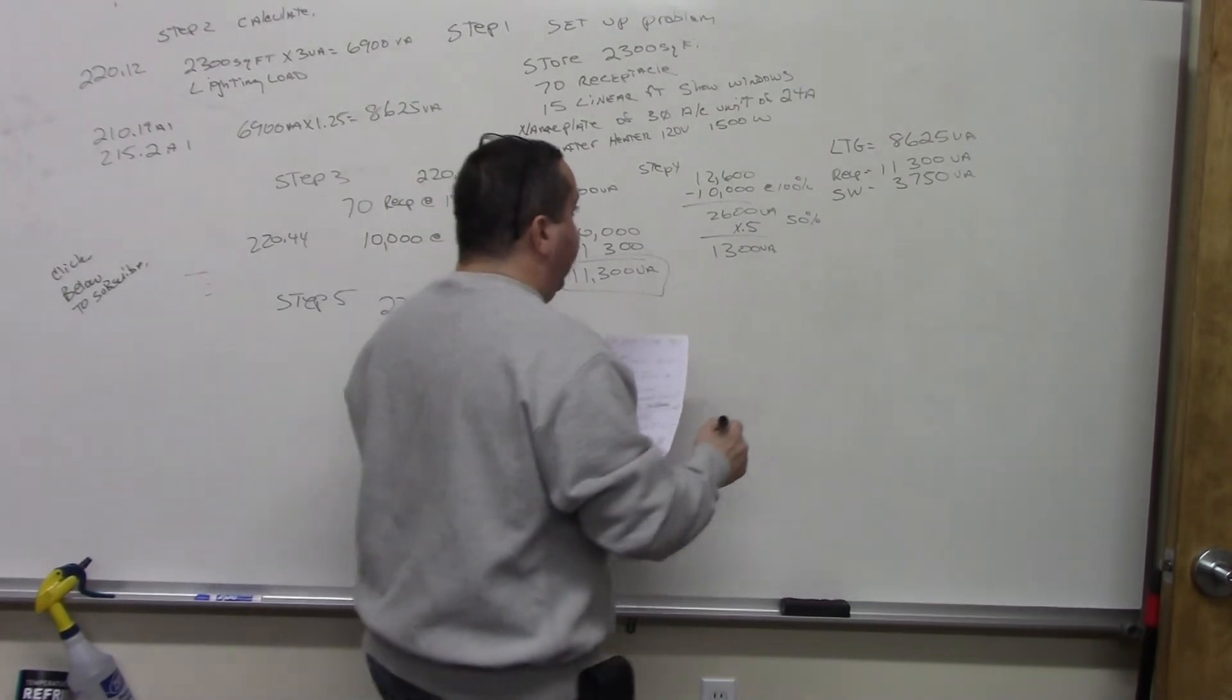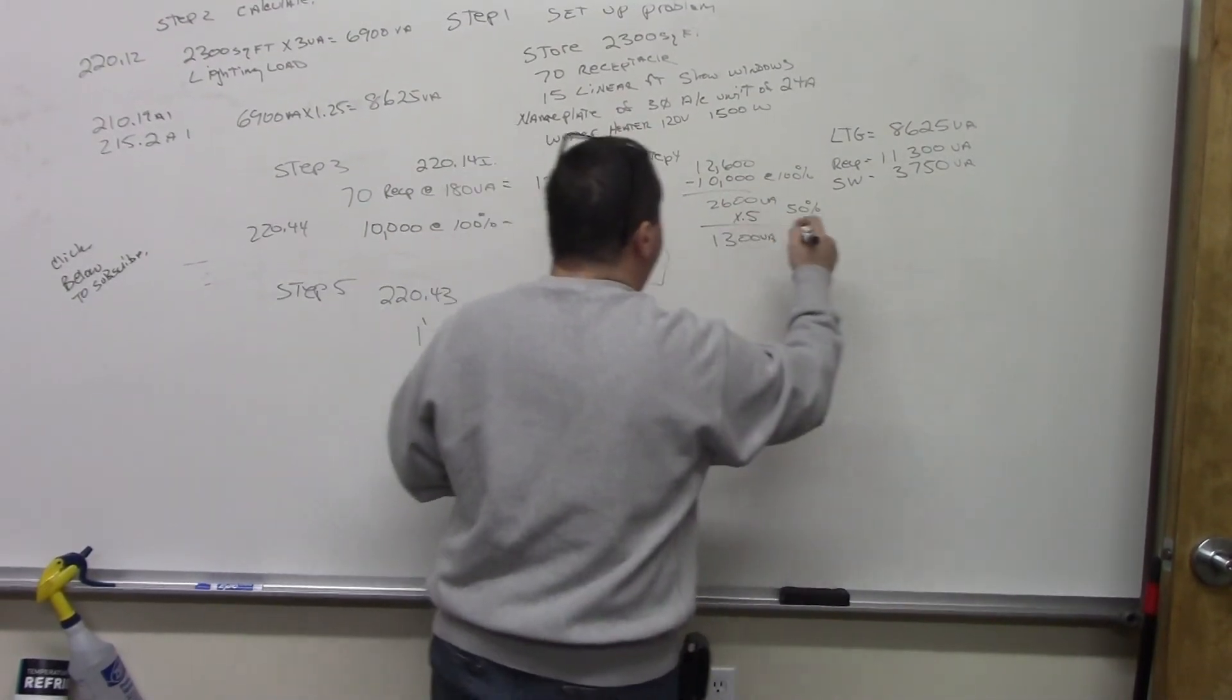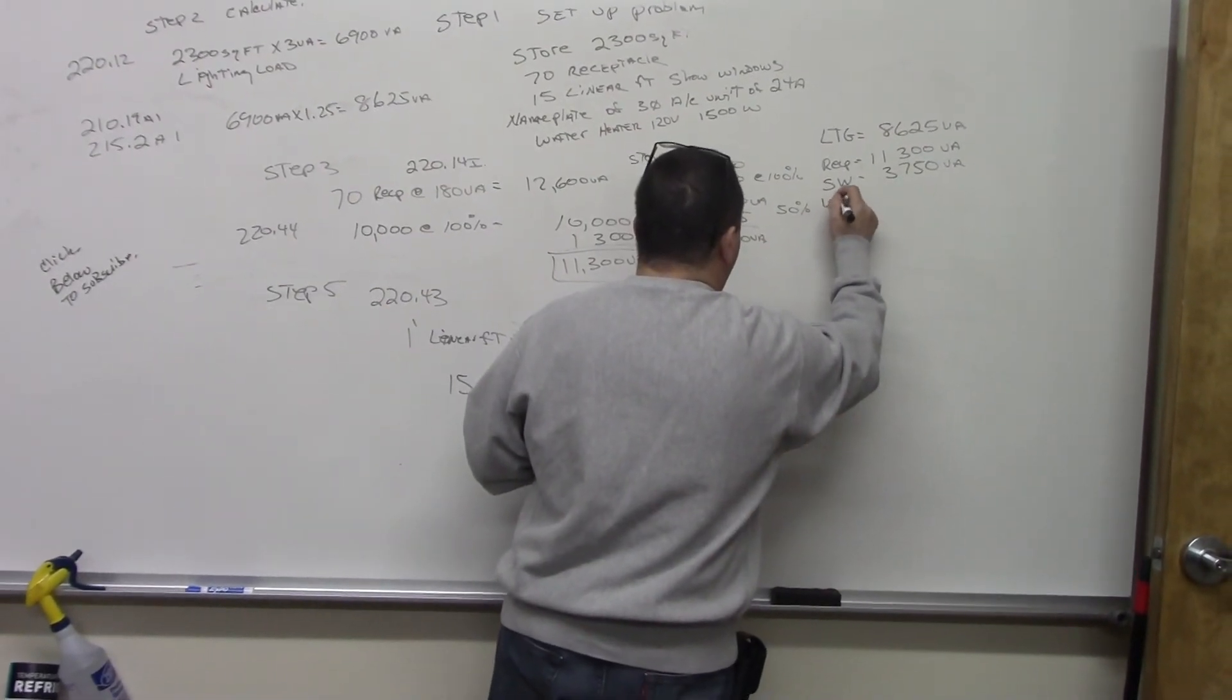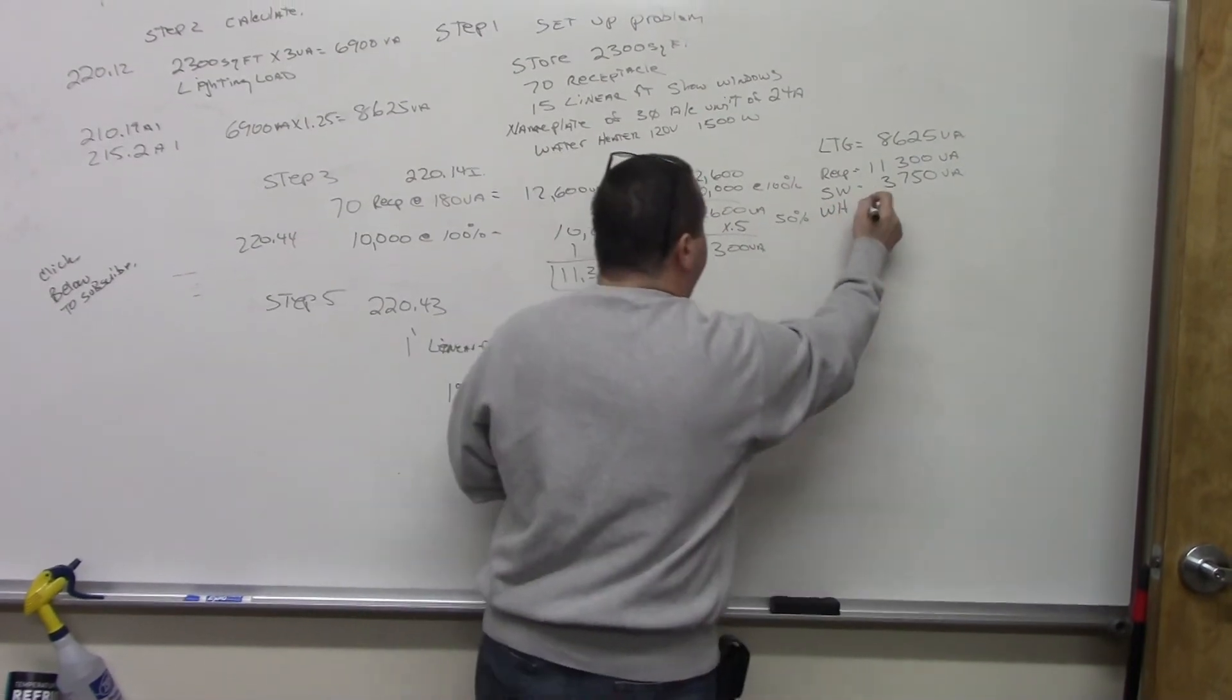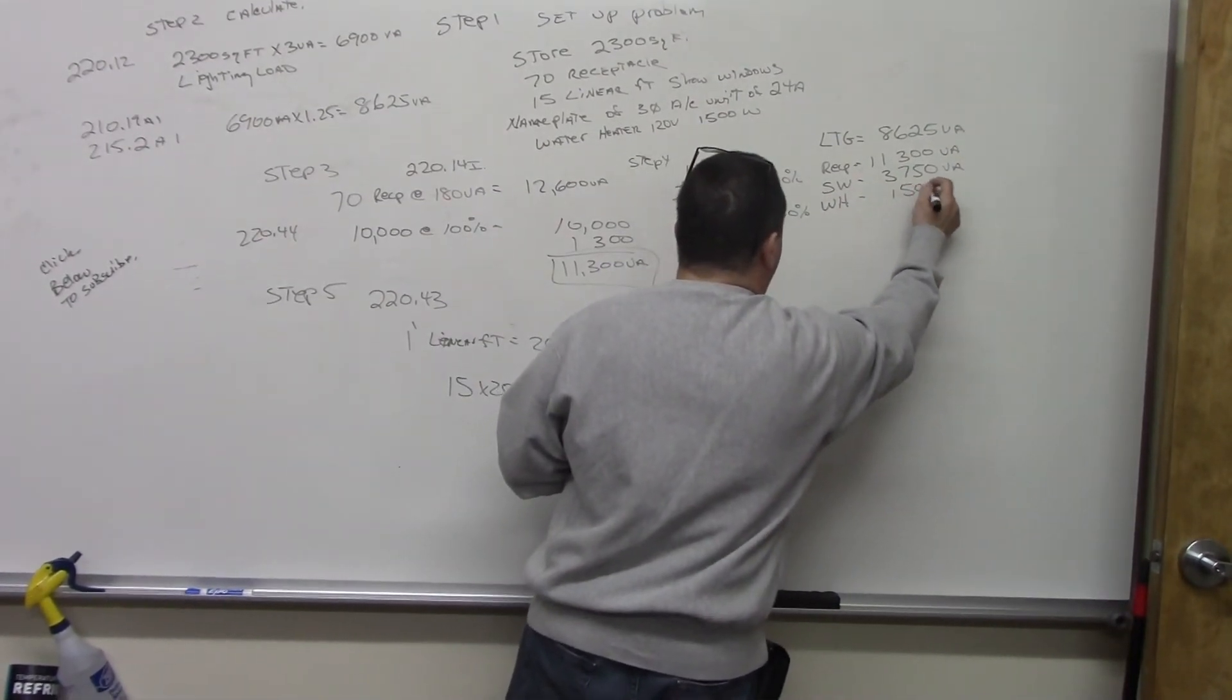Then, we have a water heater. We're going to skip the AC right now. We're just going to do the water heater, which is 1,500 volt amps.